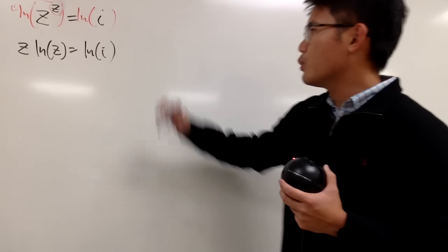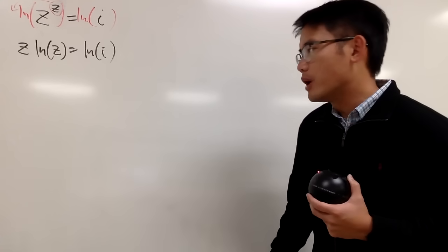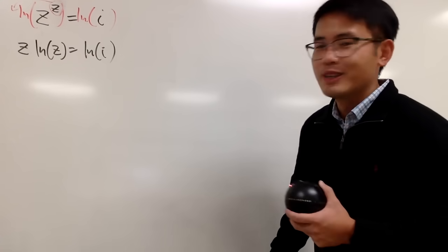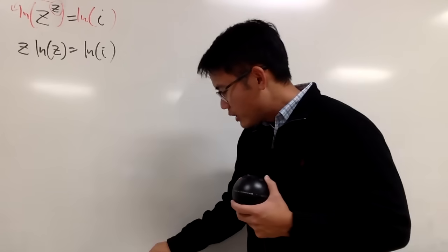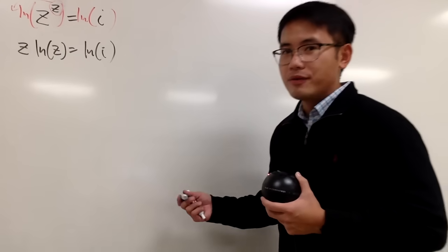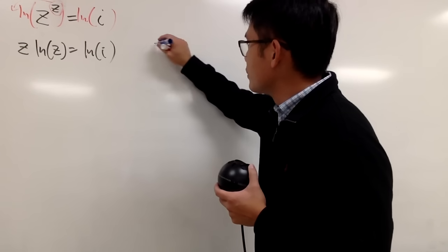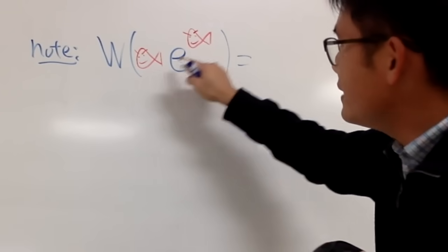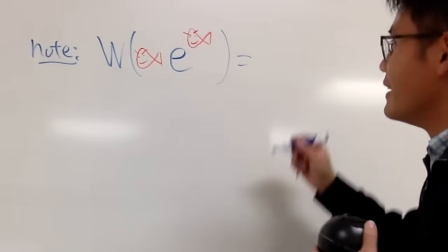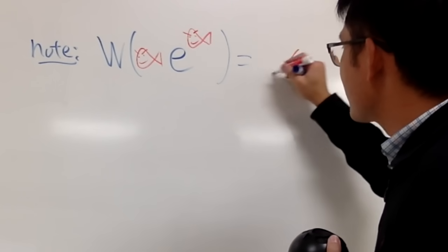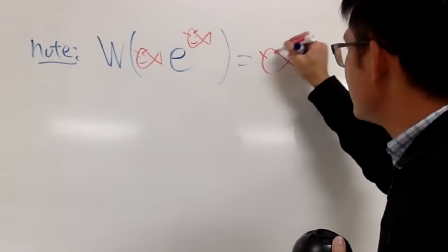And now you might be wondering, what is ln i? Well, don't worry too much, just worry about that later. And remember, in order to utilize the Lambert W function, I will just put a note right here for you guys. If these two fish are the same, then of course you get that fish back. So that's the idea.